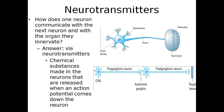Neurons communicate with each other via neurotransmitters. A neurotransmitter is a chemical substance made in the neurons that is released when an action potential comes down the neuron. The nerve impulse travels through the preganglionic neuron, releasing neurotransmitters which activate the postganglionic neuron, which then releases other neurotransmitters to activate the target tissue.